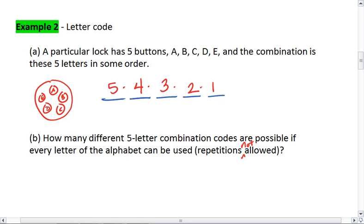I multiply all these together. Five times four times three times two times one is the same as five factorial. Five factorial, which we use the exclamation point to represent, is 5 times 4 times 3 times 2 times 1.